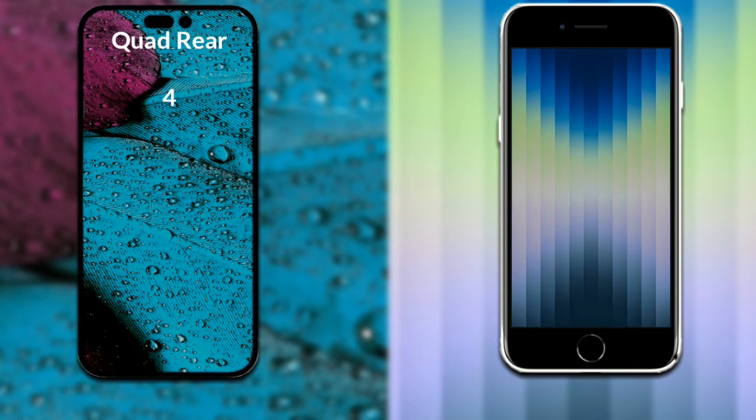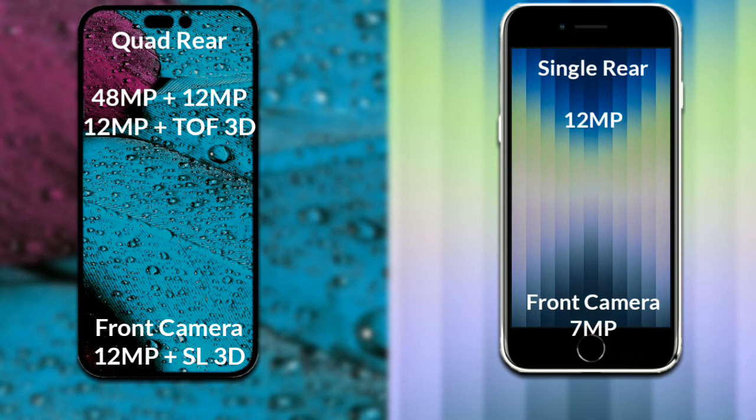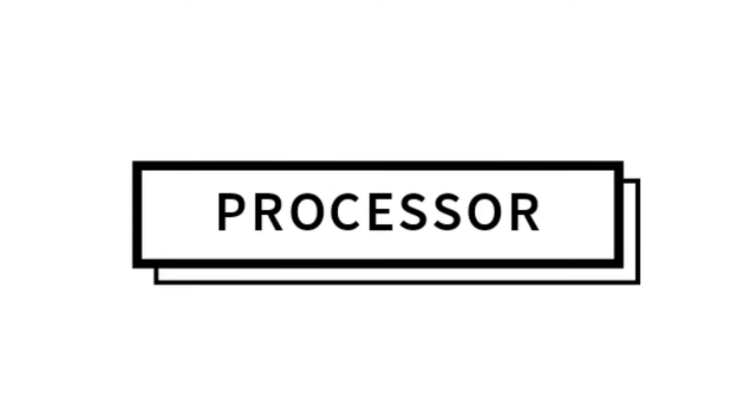Now let's compare the cameras. The iPhone 14 Pro Max has a quad rear camera setup: the primary camera is 48 megapixel, secondary sensor 12 megapixel, third sensor 12 megapixel, and a fourth ToF 3D scanner sensor. Its dual front camera is 12 megapixel plus a 3D scanner. The iPhone SE has a single rear camera with a 12 megapixel primary camera, and its front camera is 7 megapixel.